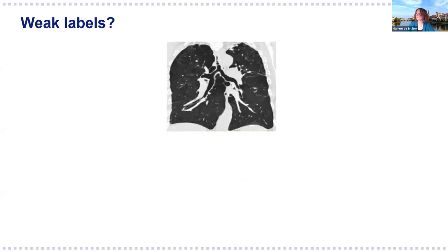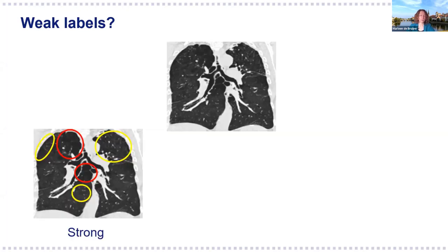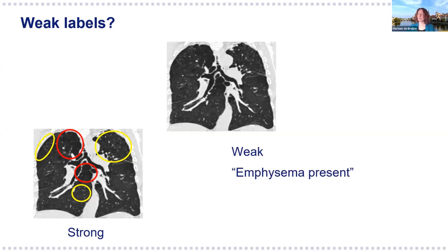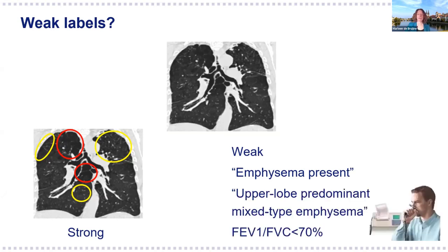Another example I'll cover today is quantification of lung disease. Strong labels would typically indicate the abnormalities present—what type they are, how large they are, and where they are—whereas weak labels would just state that in this image there is emphysema present, or provide a typical radiology report statement such as 'upper lobe predominant mixed type emphysema,' or maybe even the lung function of the patient.